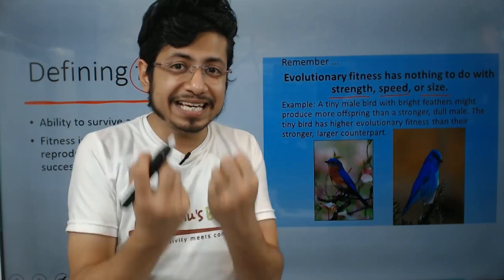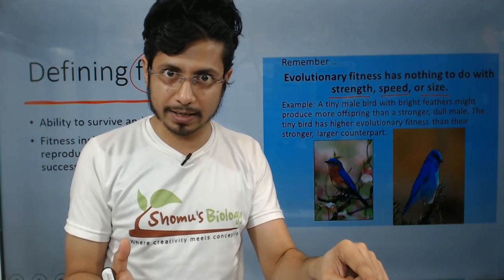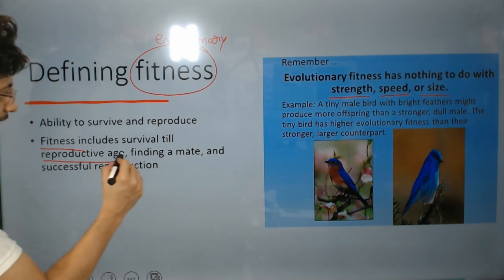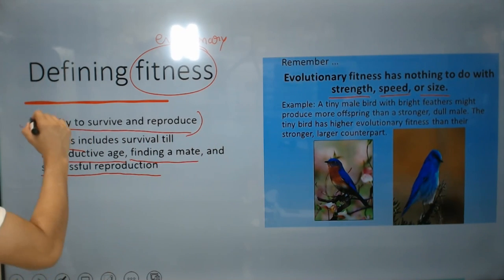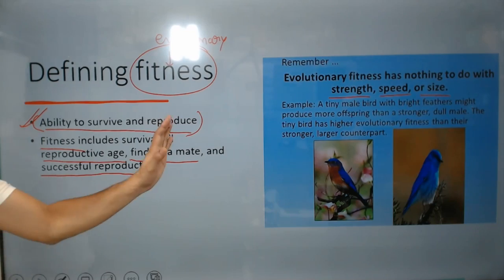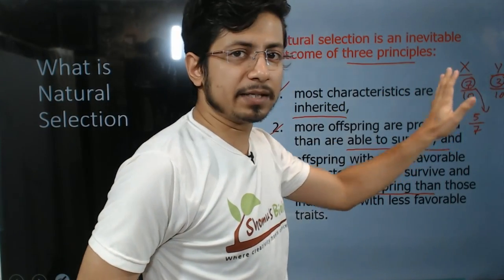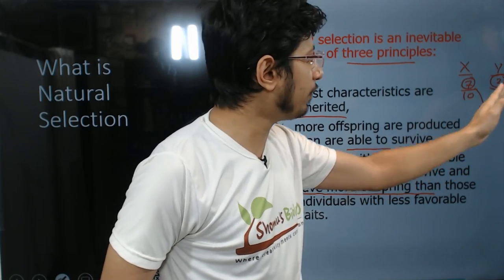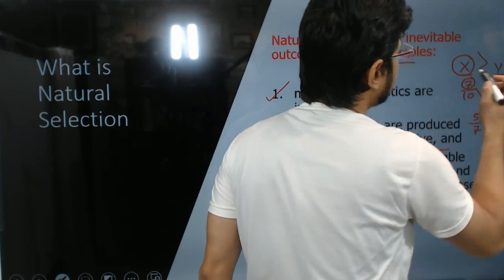Fitness means the ability to produce offspring. To produce offspring, an organism needs to survive till reproductive age, find a proper mate for reproduction, and achieve successful reproduction. All three things together count as evolutionary fitness. Going back to our example, between organism X and Y — X has 7 out of 10 offspring survive, Y has only 3 out of 10. So X has greater fitness than Y.